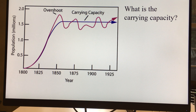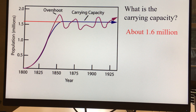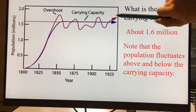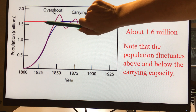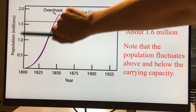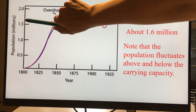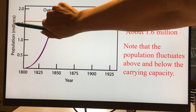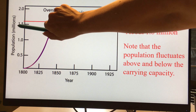So what is the carrying capacity of this population? It's about 1.6 million. What you have to do is take a ruler and go right through the middle of the fluctuations, then all the way over to the y-axis and read what the population is. Here it would be about 1.6 million because it says population in millions.